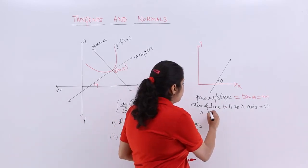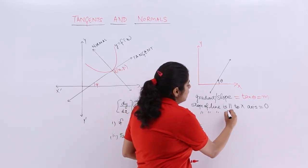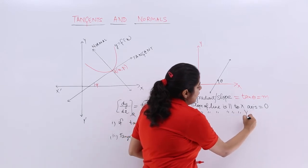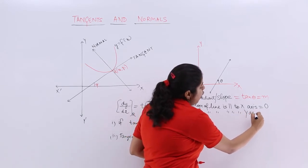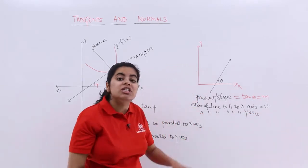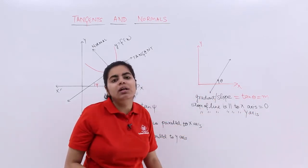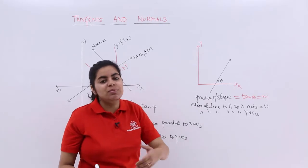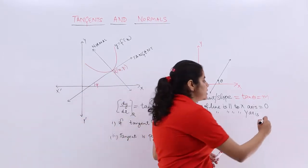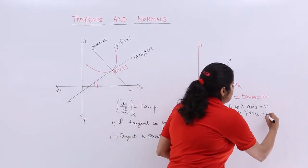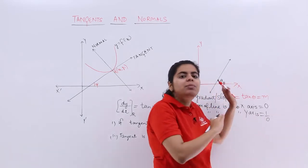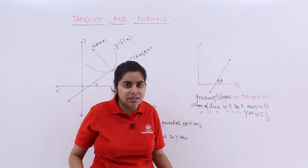Similarly, the slope of a line parallel to the y-axis — or perpendicular to the x-axis — means the angle θ with the x-axis is 90°, so the slope is nothing but 1 upon 0. This is all the preliminaries basically.